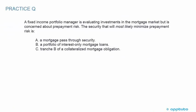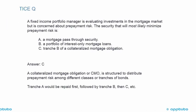One last practice question: A fixed income portfolio manager concerned about prepayment risk is evaluating mortgage market investments. The security that will most likely minimize prepayment risk is: A. a mortgage pass-through security; B. a portfolio of interest-only mortgage loans; or C. tranche B of a collateralized mortgage obligation. The correct answer is C. A CMO is structured to distribute prepayment risk among different classes or tranches. Tranche A would be repaid first, followed by tranche B, then C, etc. That's the last slide for this LOS.